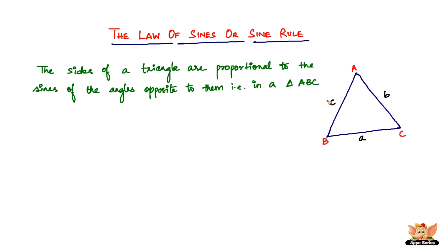In this triangle ABC, when we say the sides of a triangle, we obviously mean the lengths of the sides. These sides are proportional to the sines of the angles opposite to them.